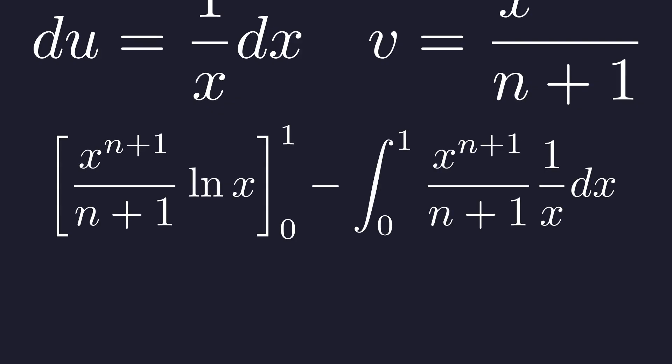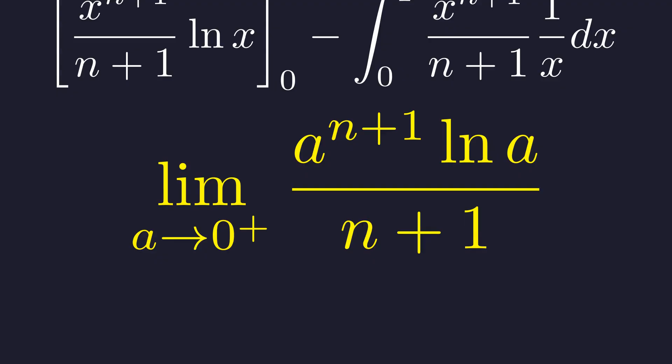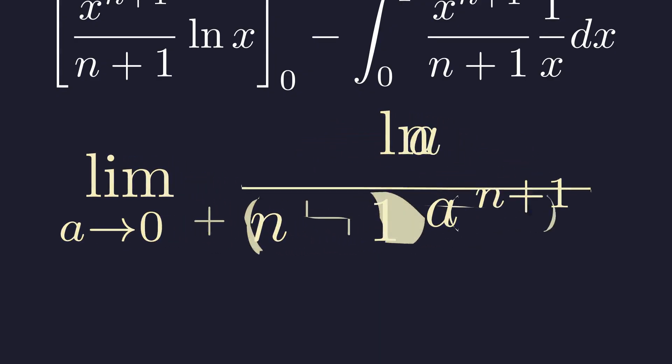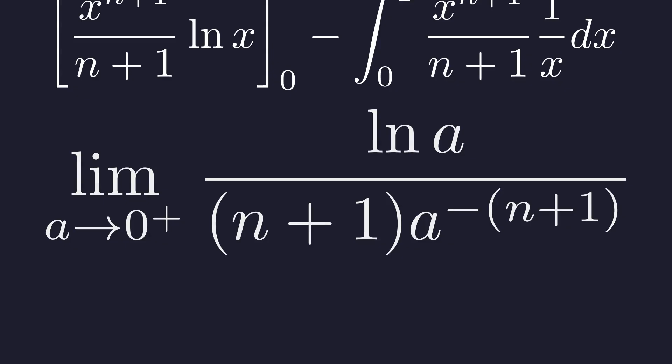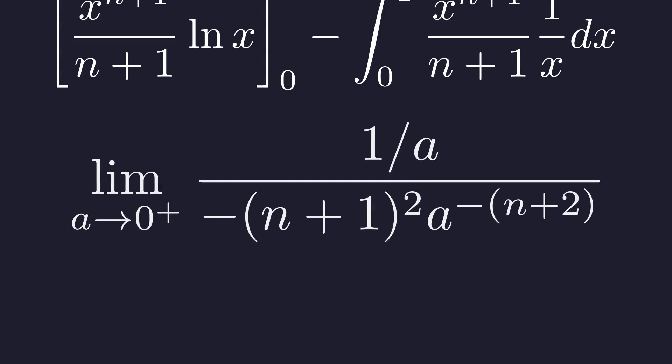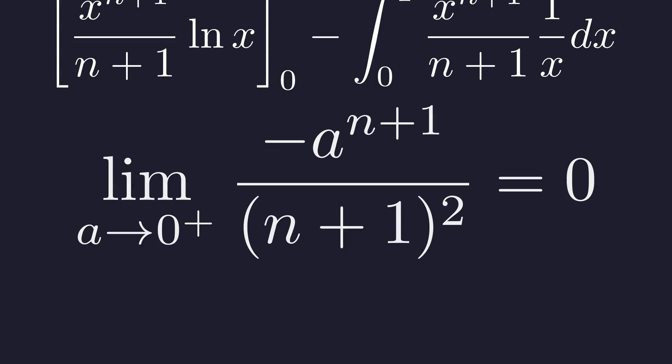The interesting part is the boundary term at 0. We need the limit as a approaches 0 from the right. This gives 0 times negative infinity, which is indeterminate. To use L'Hopital's rule, we rewrite this as a fraction, negative infinity over positive infinity. Differentiate top and bottom with respect to a. After simplifying, we get negative a to the power of n plus 1, which goes to 0. So the lower bound contributes nothing.